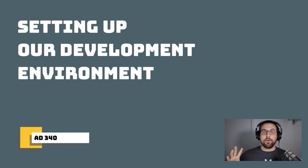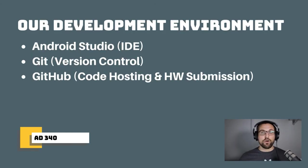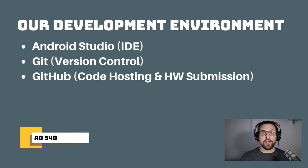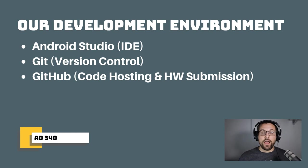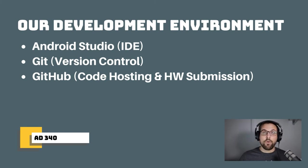The first step to becoming Android developers is to set up our development environment. Our development environment for this course will be comprised of three things: Android Studio, which will be our IDE; Git, which we'll use for version control; and GitHub, which we'll use to store our code and submit homework assignments. Hopefully you're all somewhat familiar with Git and GitHub. If not, I've included resources in this week's module on how to get set up, and I'll also be going through some of that in the demo for this week's lecture.